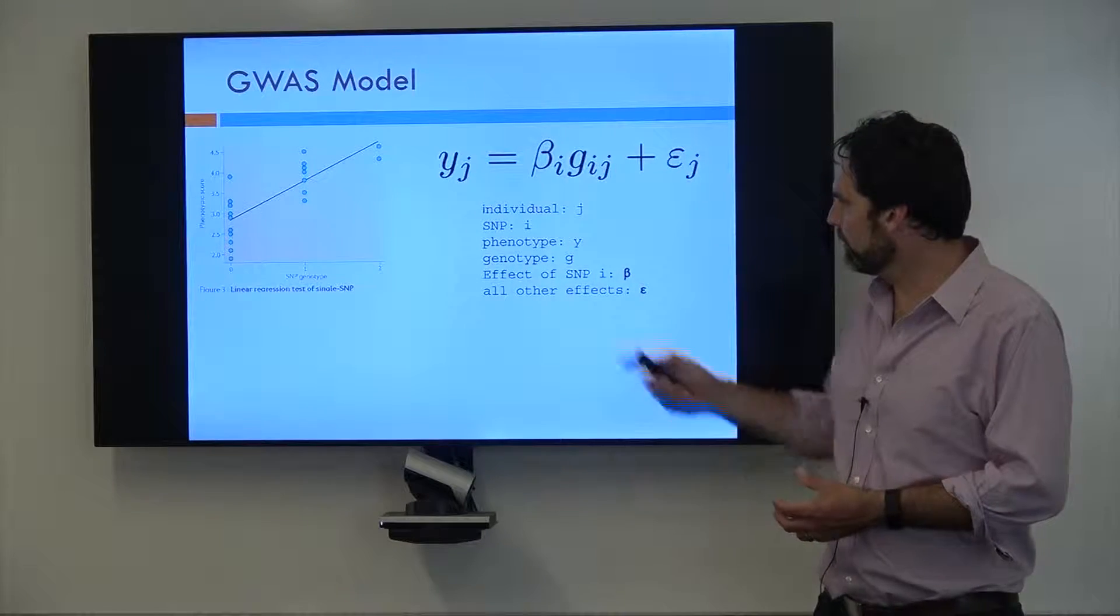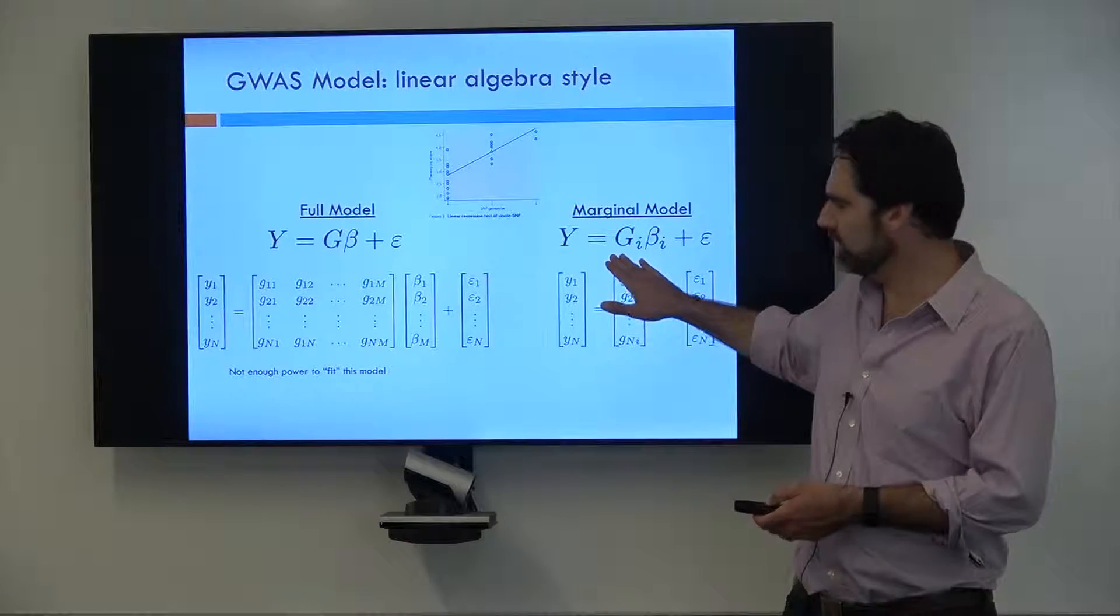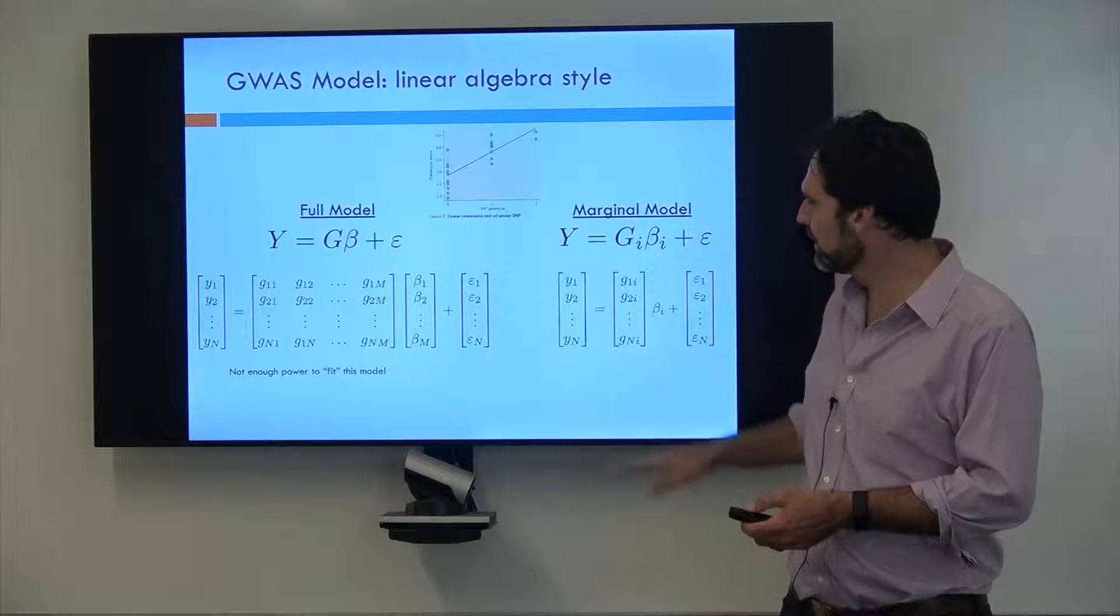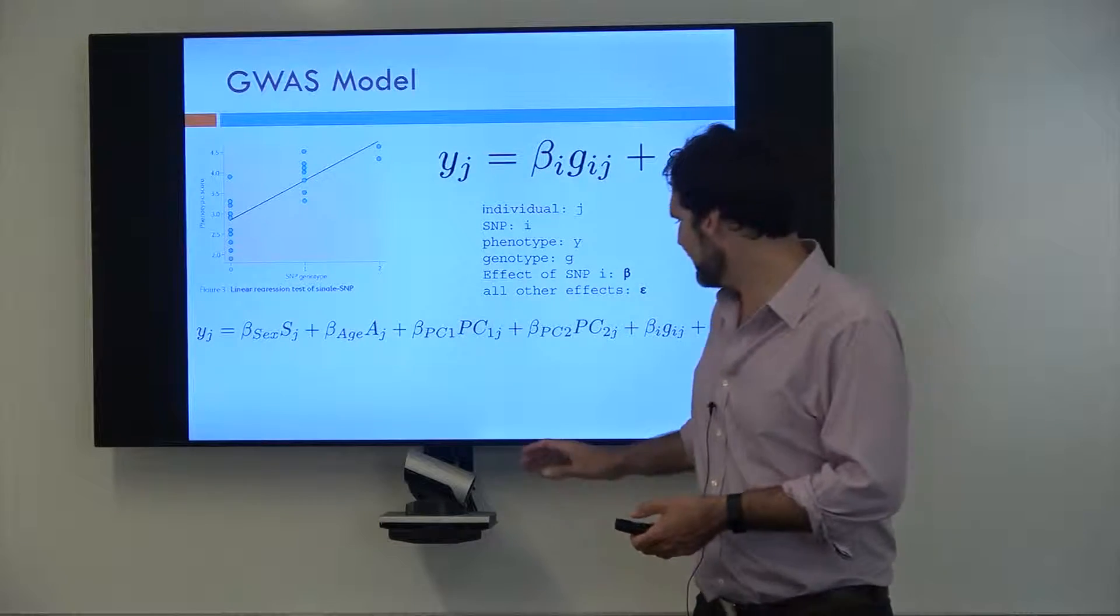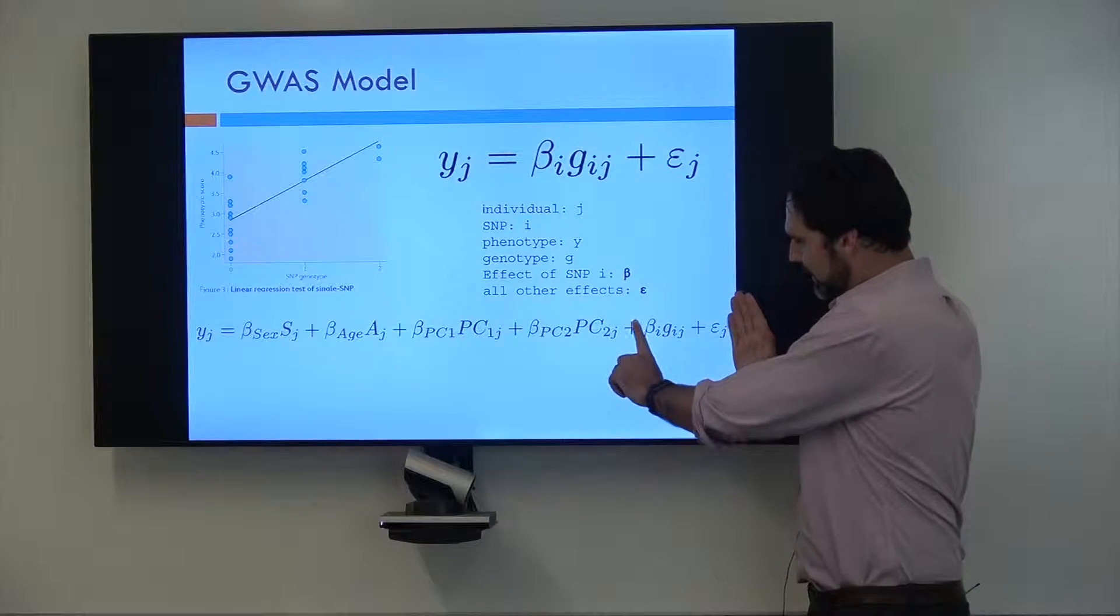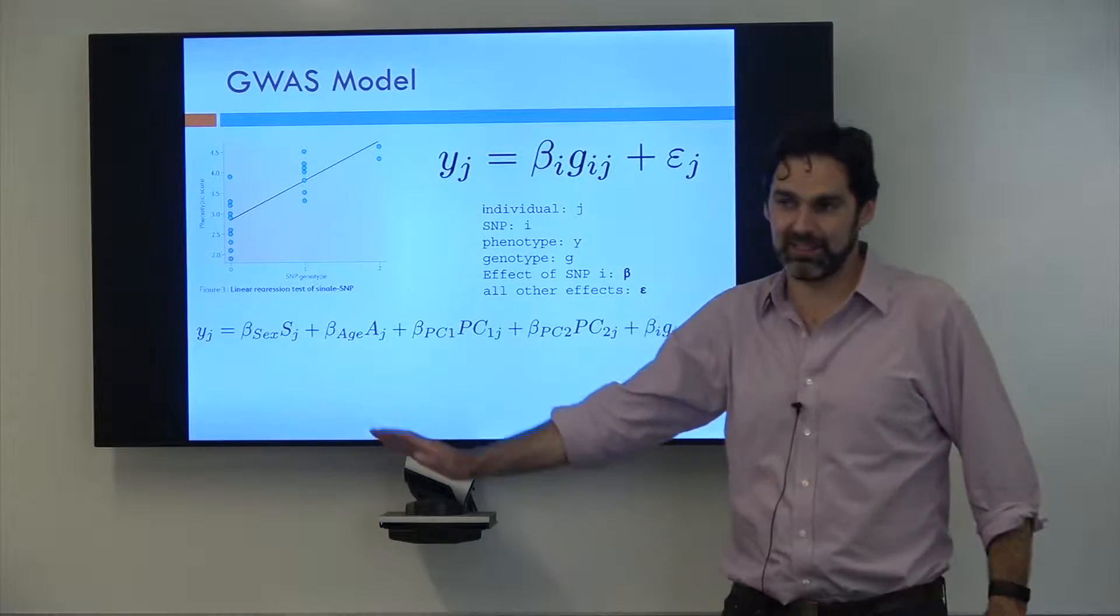The reason I'm writing this out like this is because while this model looks really easy and this is really what we want to do, it unfortunately has to be a little bit more complicated. This right here is that model I just showed you, and everything over here in this equation we call covariates.